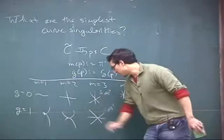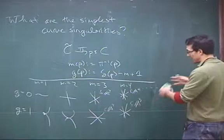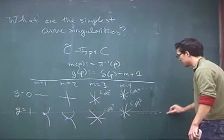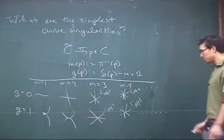If I consider four lines in A³, then five lines in A⁴, and so on, it turns out those singularities all have genus 1. So there's an infinite sequence. These are genus 1 singularities.